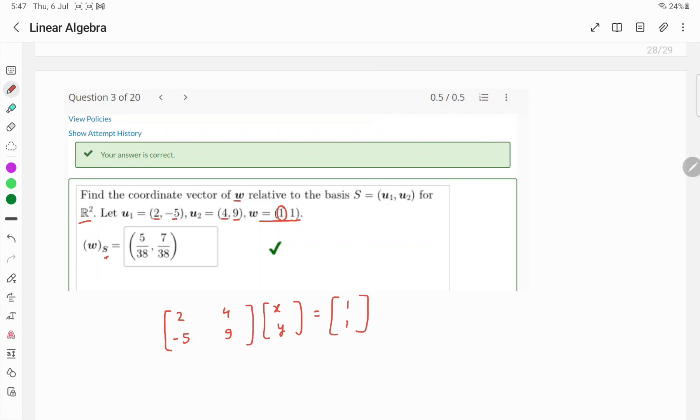In order to understand it simply, you can write the transpose of this vector (2, -5), transpose of this vector (4, 9), times XY equals (1, 1), the transpose of W. From here you will get in the calculator X equals 5 over 38 and Y equals 7 over 38.